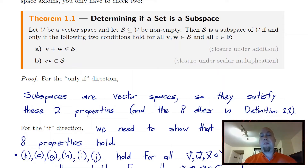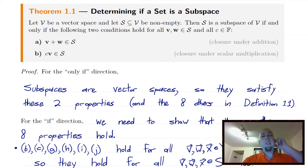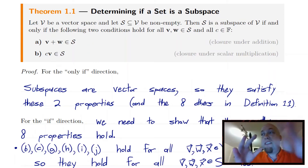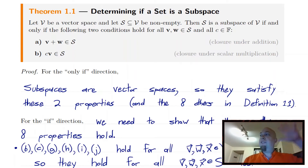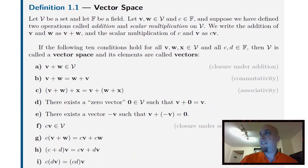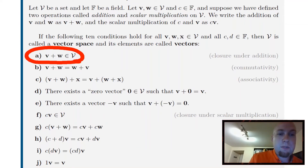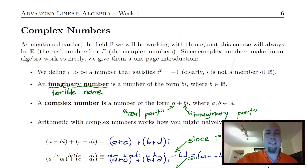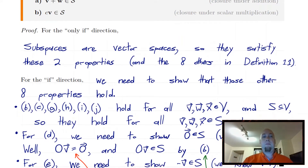Our first goal in this lecture is proving this theorem. It's an if-and-only-if theorem: S is a subspace if and only if these two closure properties hold. For the 'only if' direction, we want to show that if S is a subspace — a vector space — then these two properties hold. This is straightforward: looking back at the 10 properties defining a vector space, property A (closure under addition) and property F (closure under scalar multiplication) are exactly the properties we want. So that direction is trivial.